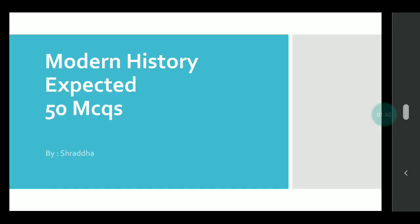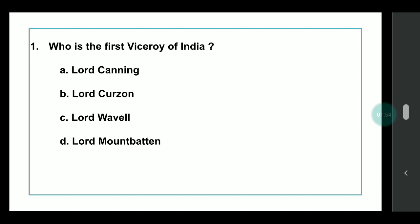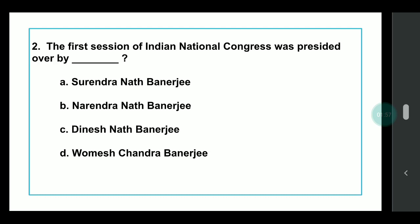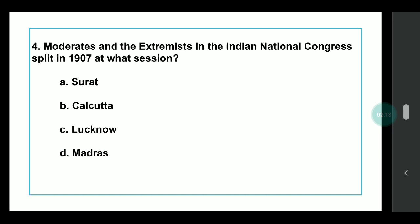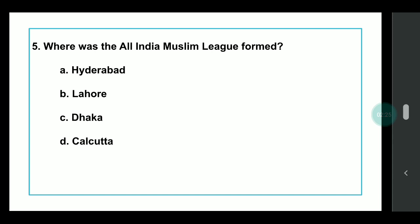Let's start our MCQ session. Q1: Who is the first Viceroy of India? Answer: Lord Canning. Q2: The first session of Indian National Congress was presided over by whom? Answer: W.C. Banerjee. Q3: Dayanand Saraswati was the founder of which organization? Answer: Arya Samaj. Q4: The Moderates and Extremists in INC split in 1907 at which session? Answer: Surat Split. Q5: Where was the All India Muslim League formed? Answer: It was formed in Dhaka.